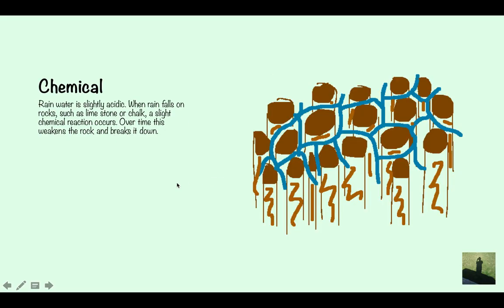The last type is chemical weathering. This is where rain water is slightly acidic. When rain falls on rocks such as limestone or chalk a slight chemical reaction occurs and over time this weakens the rock and breaks it down. As you can see here this is the rock, the rain's fallen down so it's probably going to be limestone. Because the rain water is slightly acidic it's just breaking down the rock and making it smaller.